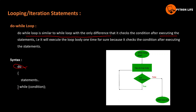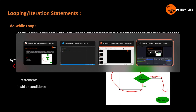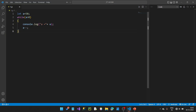The syntax is: do, then statements, then while condition with a semicolon at the end. With the while loop you check the condition first, but with do-while you can check the condition after. If the condition is true, you loop again; if not, you exit.